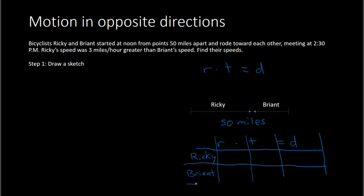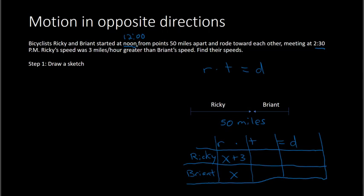Now we fill in the table with the given information. We know Ricky's speed was 3 miles per hour greater than Bryant's. So if we let Bryant's speed be x, then Ricky's speed is x plus 3. For the time, they started at noon and met at 2:30, so the time they both traveled is the same: 2.5 hours. So both of their times are 2.5.